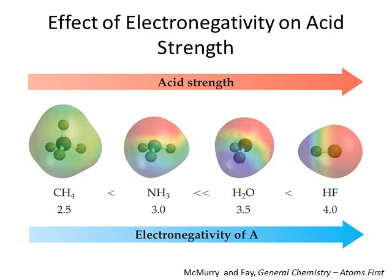Now let's look at what happens when you go across a period from left to right. The acid strength goes up. CH4 is not an acid. NH3 is mostly basic but can act as an acid. H2O is amphoteric. HF is a weak acid.